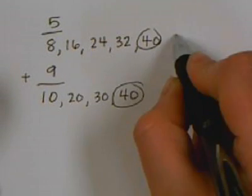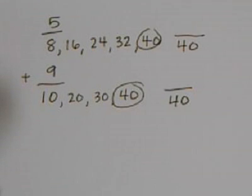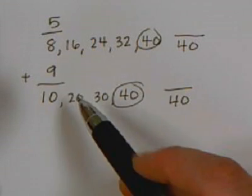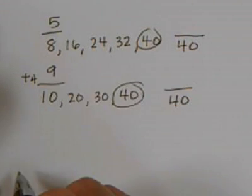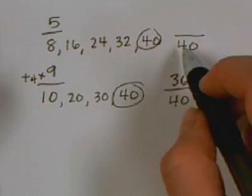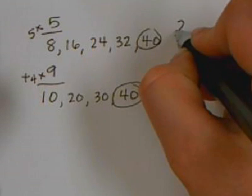So off to the side, they do a fraction bar with 40 as their new denominator. Then they go through the steps for filling in equivalent fractions. 40 divided by 10 is 4. 4 times 9 is 36. 40 divided by 8 is 5. 5 times 5 is 25.